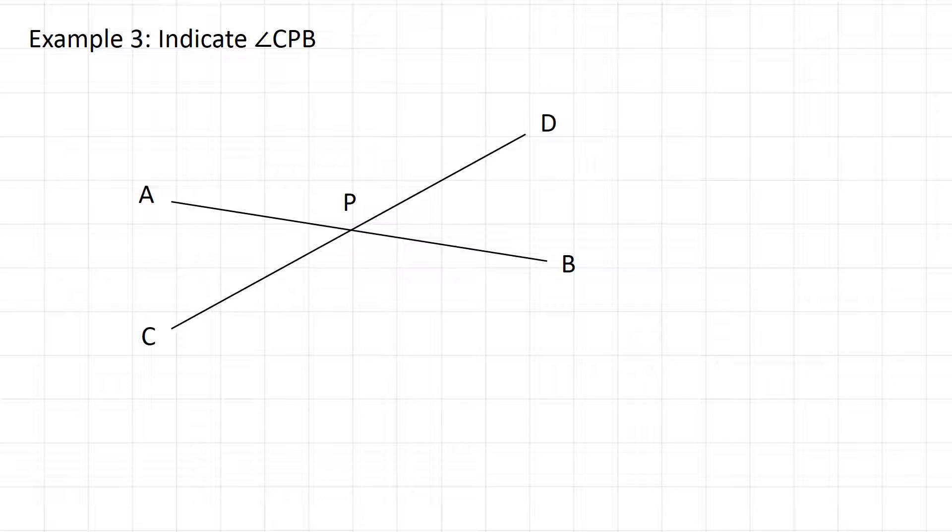Here's one that's a little trickier because we have a whole bunch more points involved. But again, we're going to follow the same tactic. Indicate angle CPB. Well, we're going to start at C, we're going to trace over to point P, and then we're going to head over to point B. So angle CPB is this turn here from the line that connects C and P to the line that connects P and B.